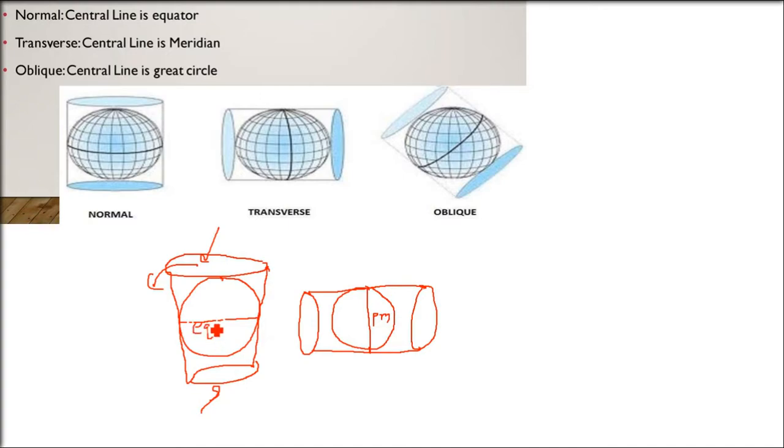So this cylinder is called the developable surface. Now I don't want to put it like this, I want to have some oblique or some angle. Not horizontal, not vertical, but in between. So this is called oblique. There will be some great circle.